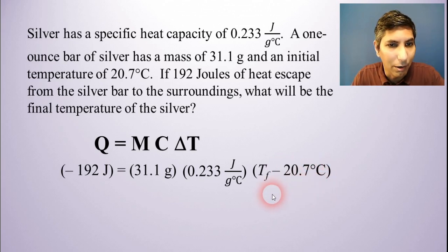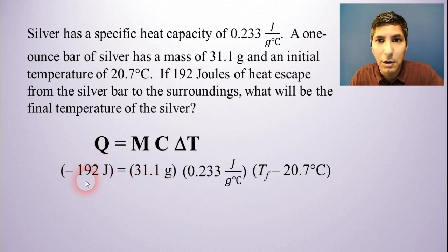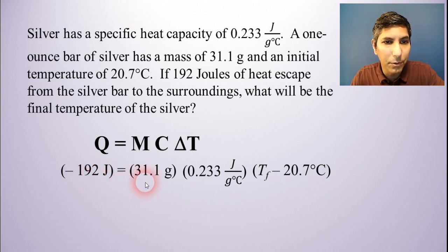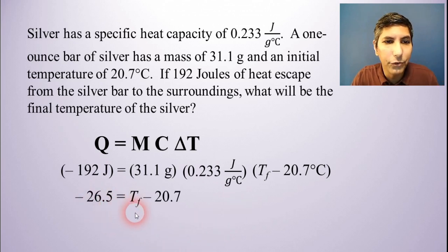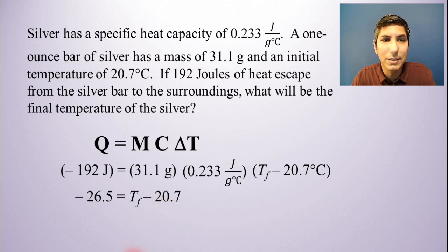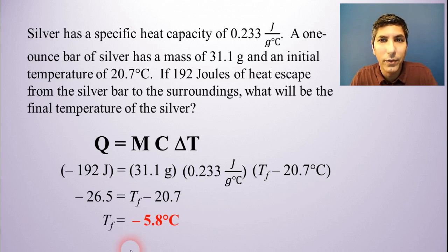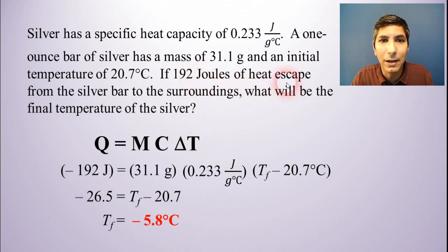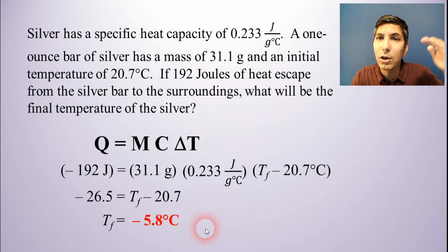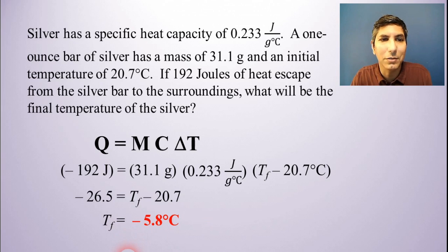Now I just have an algebra equation to solve. I'll isolate the variable by taking negative 192 and dividing both sides by 31.1 and 0.233. When I do that, I get negative 26.5 equals T sub f minus 20.7. Now I add 20.7 to both sides, and I find that T sub f equals negative 5.8 degrees Celsius. This is a reasonable answer because if heat is escaping, the temperature should be getting colder — it should be going down. So this is the correct answer.